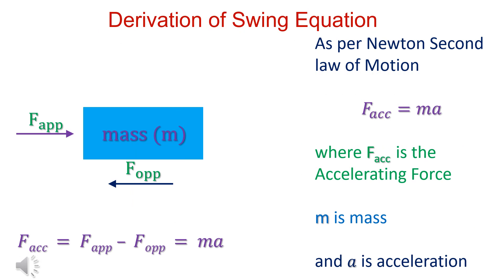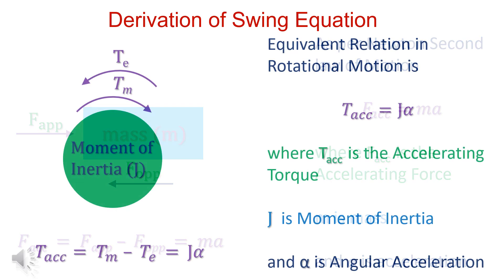Let us derive swing equation. Accelerating force is equal to ma, where accelerating force equals applied force minus opposing force. Similarly, accelerating torque is equal to j alpha, where j is moment of inertia and alpha is angular acceleration.